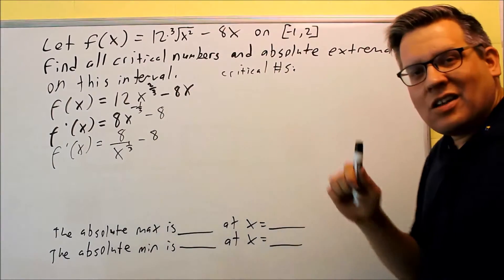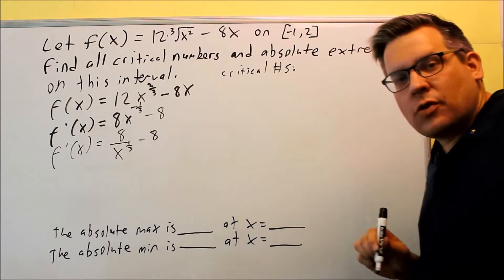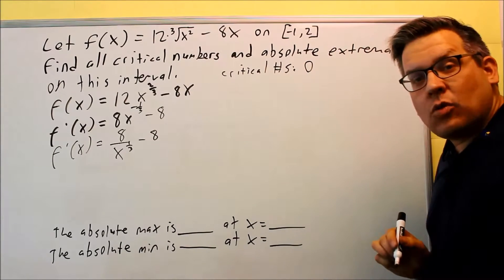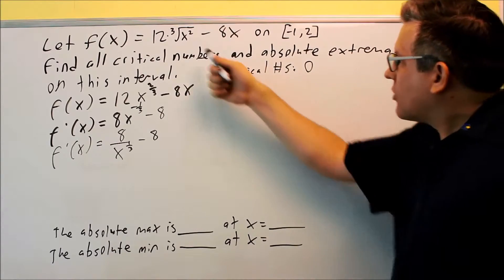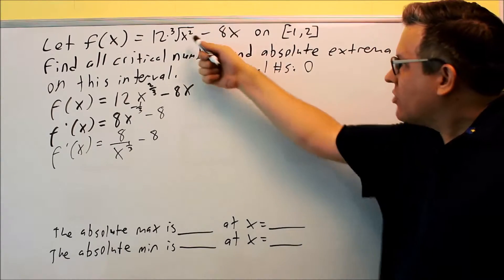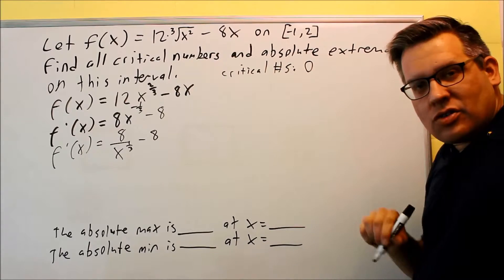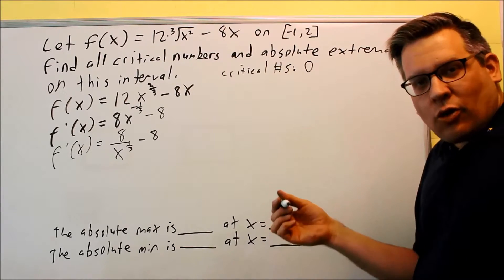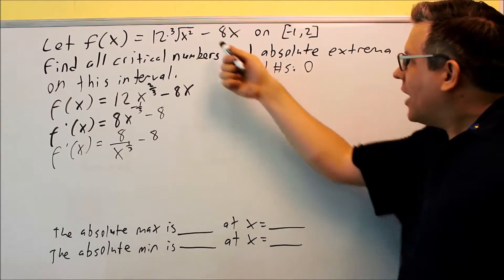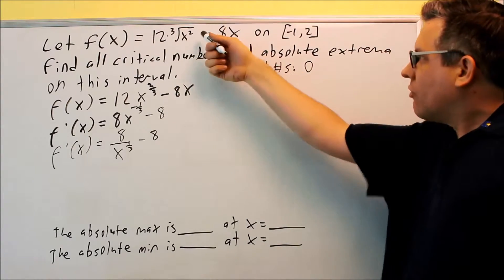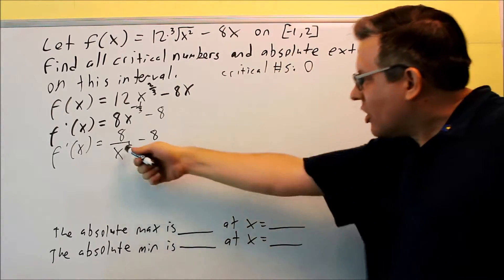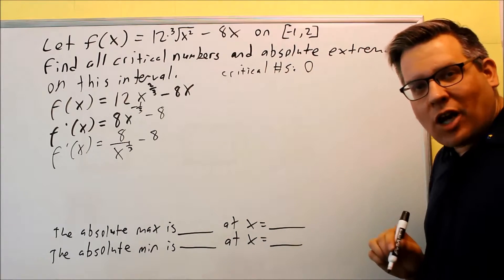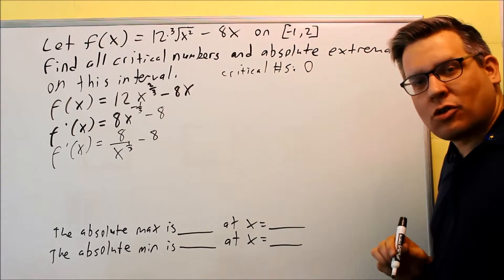I notice that 0 will make the derivative undefined, so that is going to be one of my critical numbers because 0 is also defined on the original function. If I plug 0 into here, then I'll get 0. Critical numbers have to be defined on the original function, which it is. If I plug 0 in there, I get a y value, but 0 will make this undefined because I'm dividing by 0. So that's one of my first critical numbers.